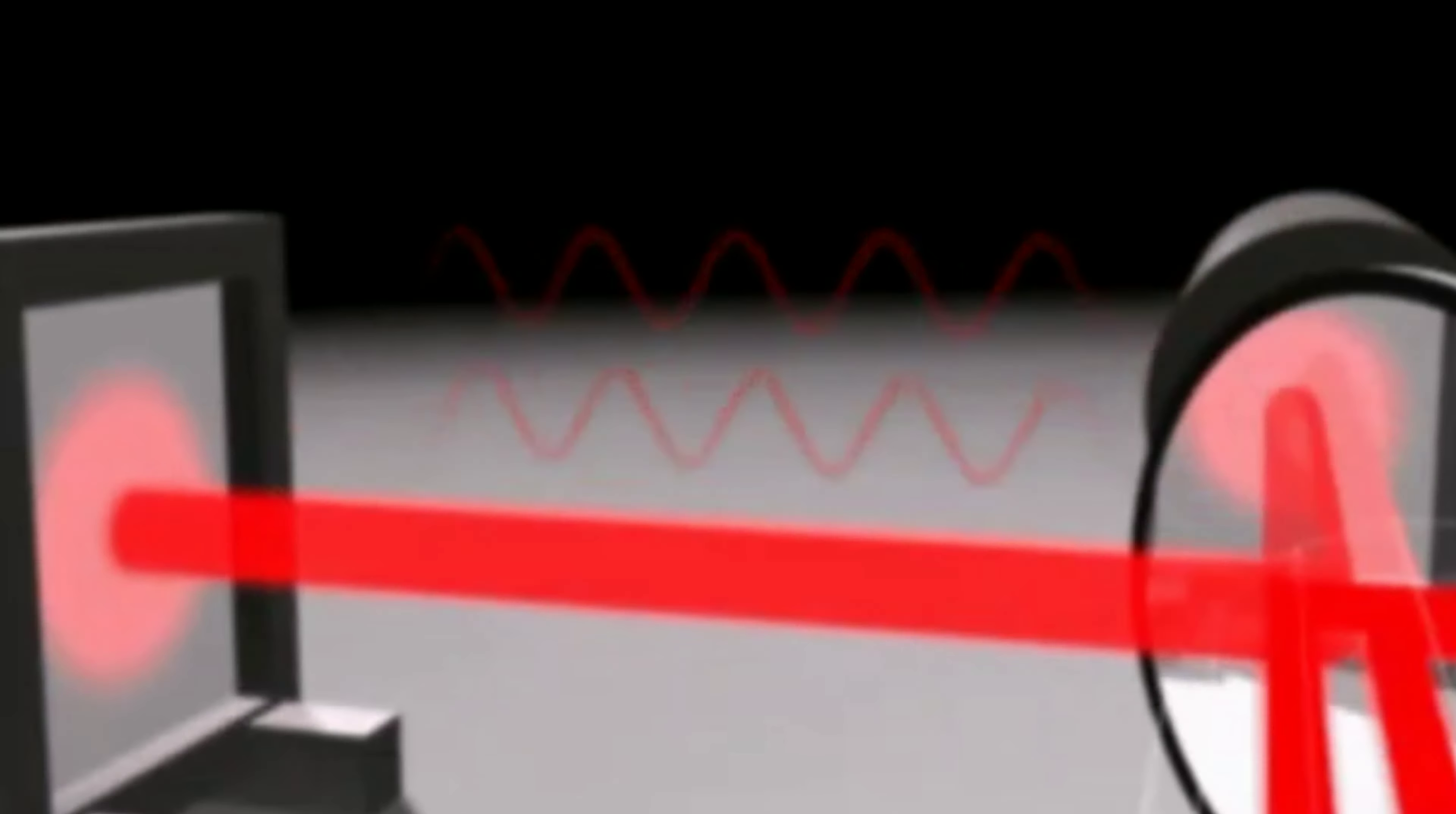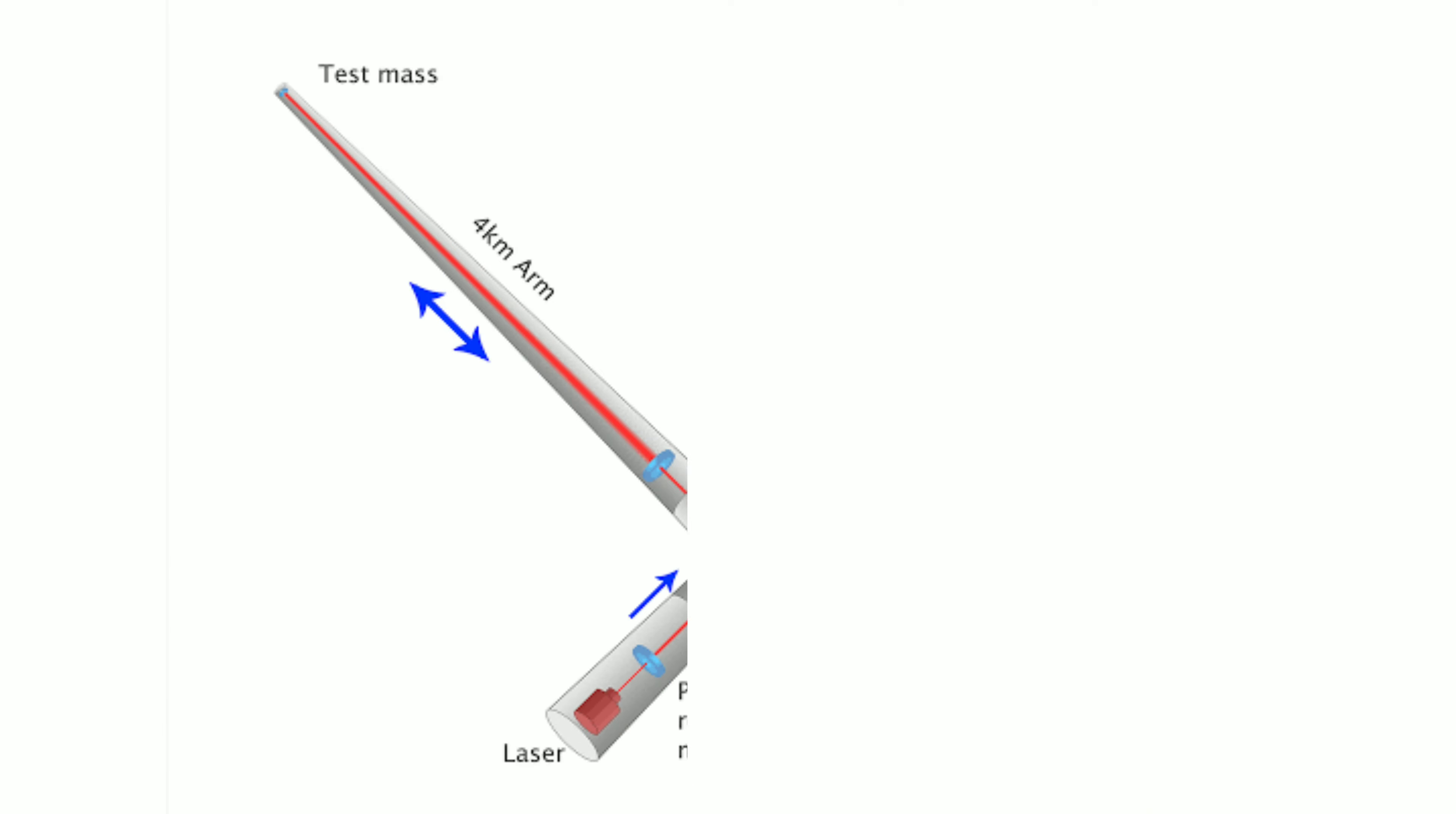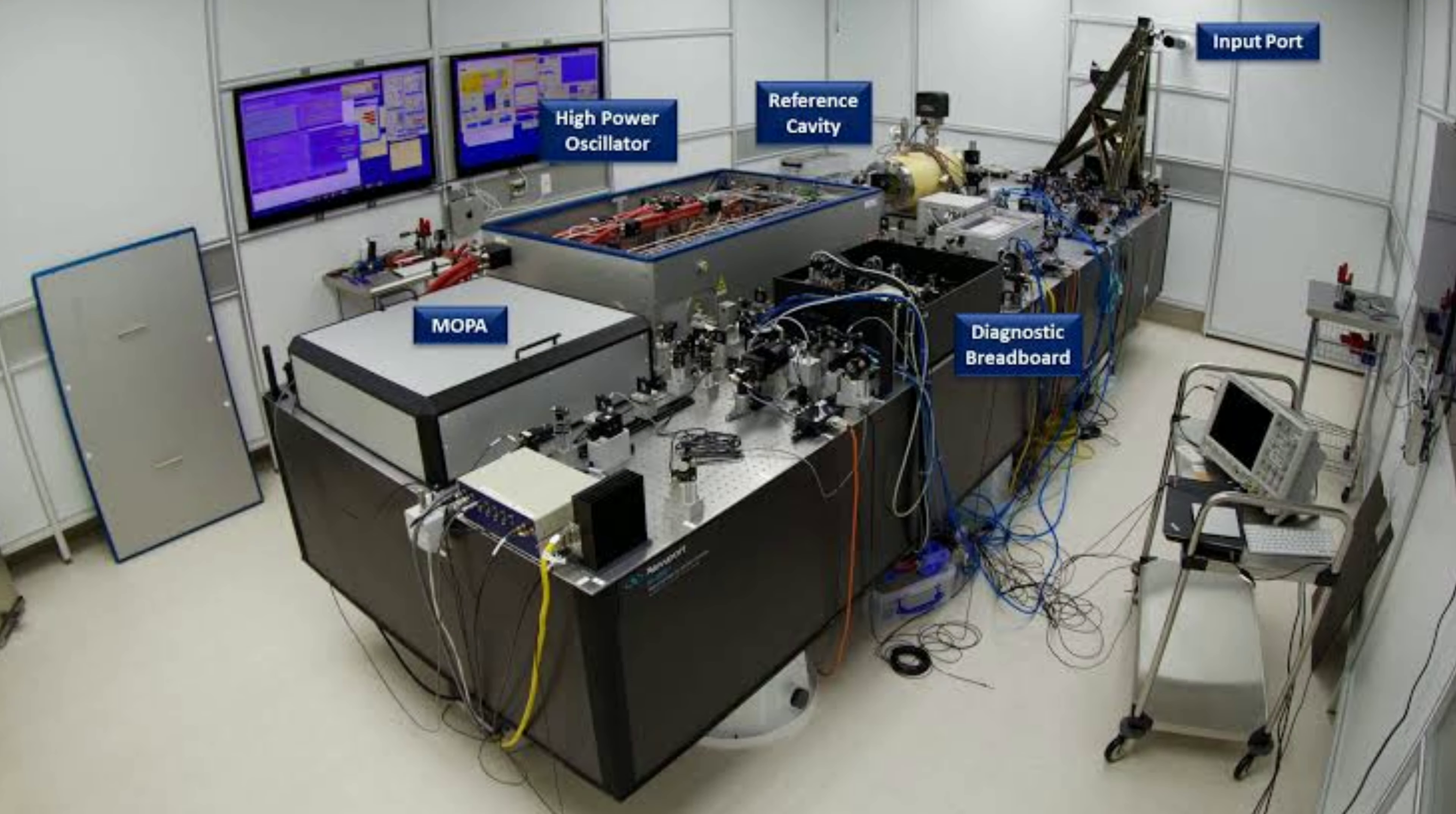Since we are doing very precise measurement, we have to put these reflectors at very large distance. For this purpose, scientists use four kilometer long two tunnels at Laser Interferometer Gravitational-Wave Observatory, in short LIGO. This was the largest vacuum tunnel ever made in this world, and for this they used a strong laser light source.